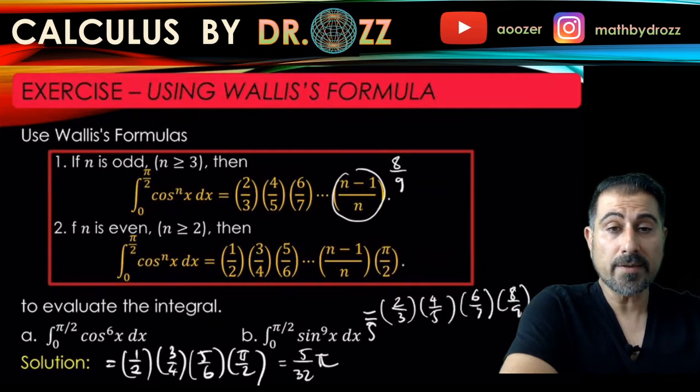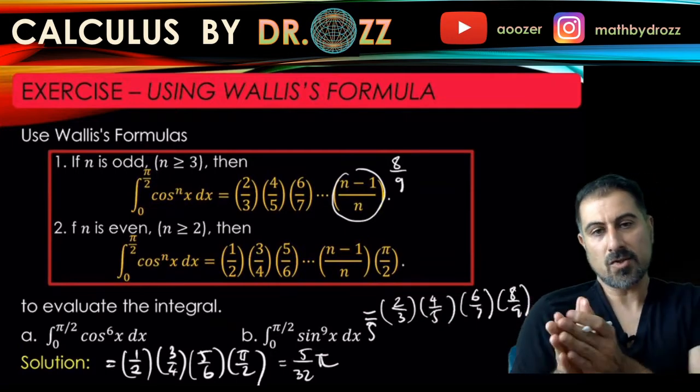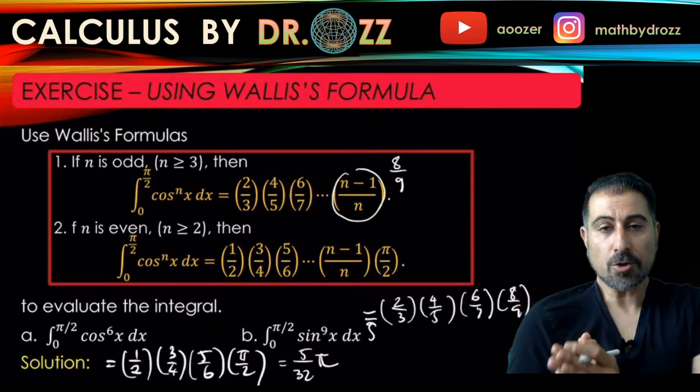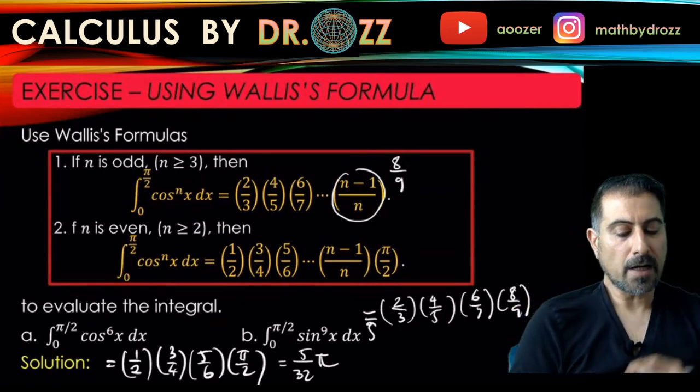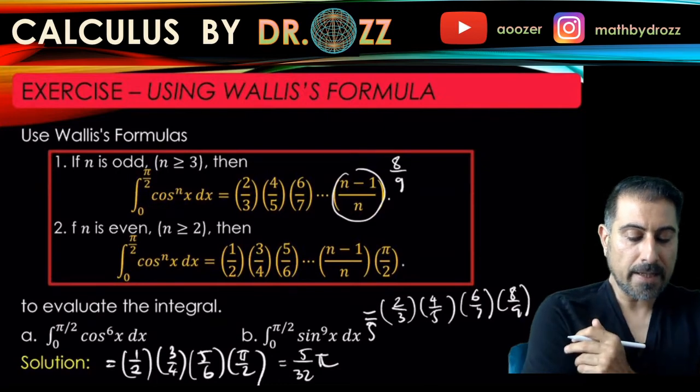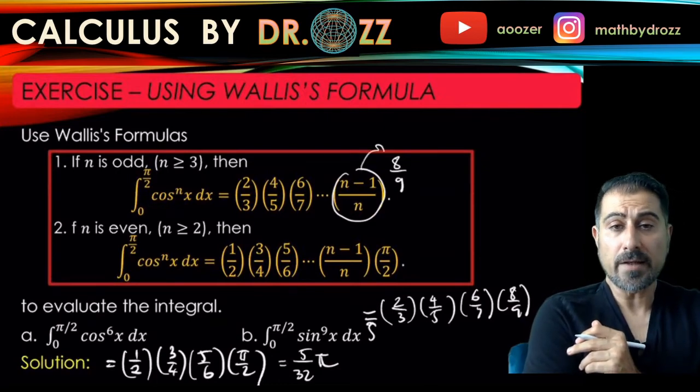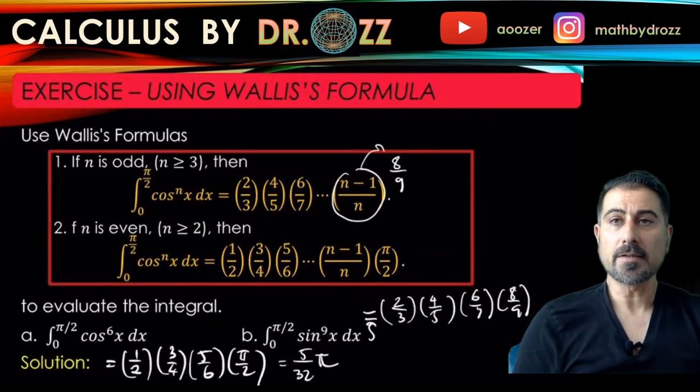I would not continue with 10 over 11 anymore, because my n is 9, and the last term should be governed by me putting in 9 for n. So the last term should be 8 over 9.